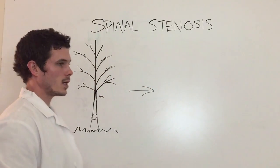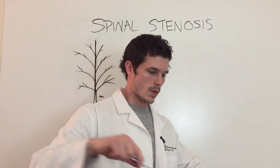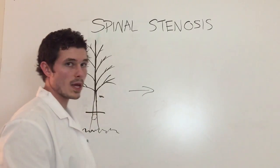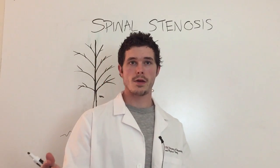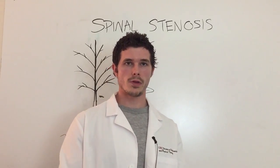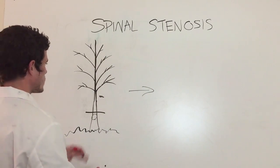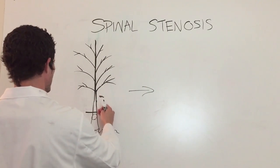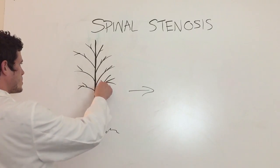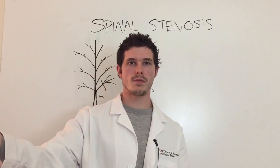Now understand this: if it's a nice day and you go outside and want to cut down a tree with a chainsaw, if you cut the tree at the base, the whole tree is going to fall down — everything above the cut is going to be affected. Now let's say you just want to cut one of the branches off. What's going to happen? The whole tree is fine, but just that one branch is going to be affected.